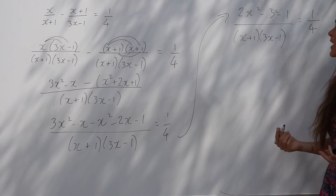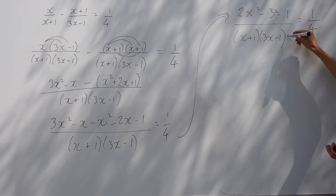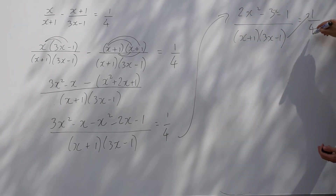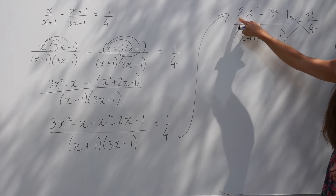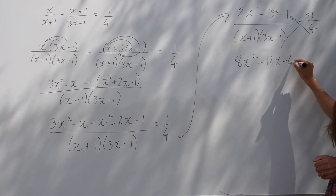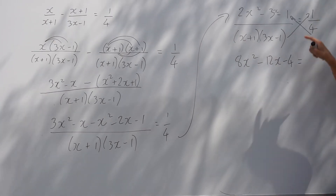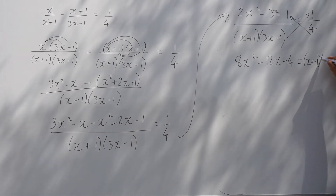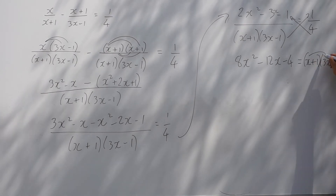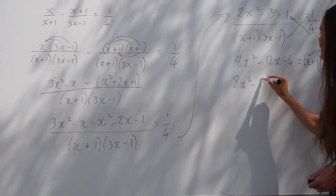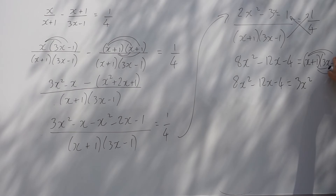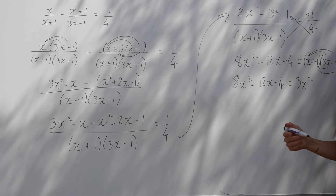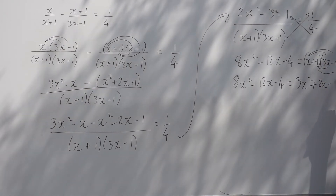I use a method called cross-multiplying when you have a fraction equal to a fraction — it's just a method to get rid of the fractions. I'm going to multiply this fraction's numerator by 4 and the right-hand side by the common denominator, so the fractions cancel. Multiplying the numerator by 4 gives 8x squared minus 12x minus 4. Then expanding the double brackets on the right-hand side: x multiplied by 3x is 3x squared; x multiplied by negative 1 is negative x; 1 multiplied by 3x is 3x, so combined that's 2x; and 1 multiplied by negative 1 is negative 1.